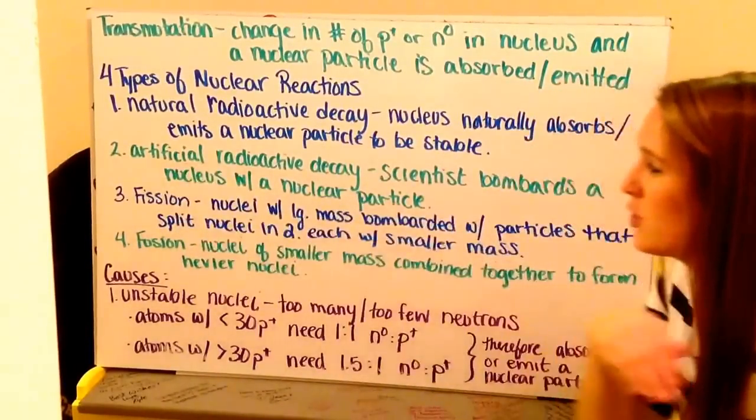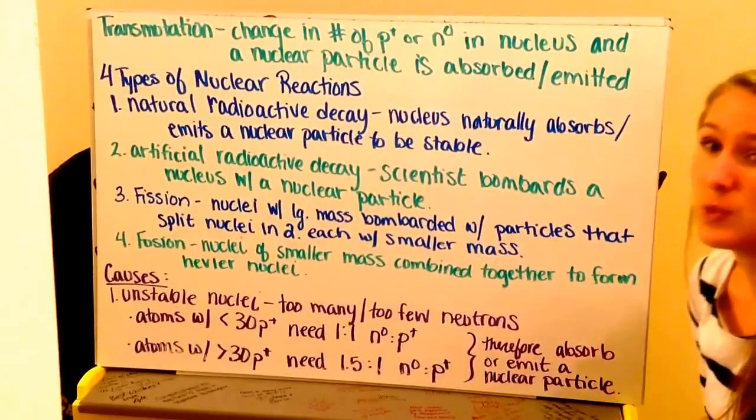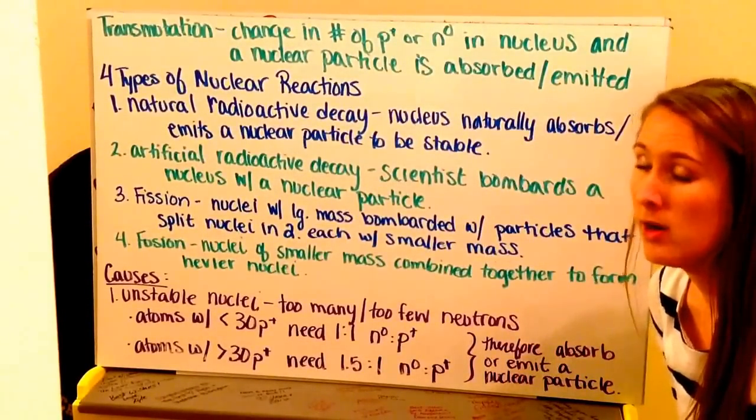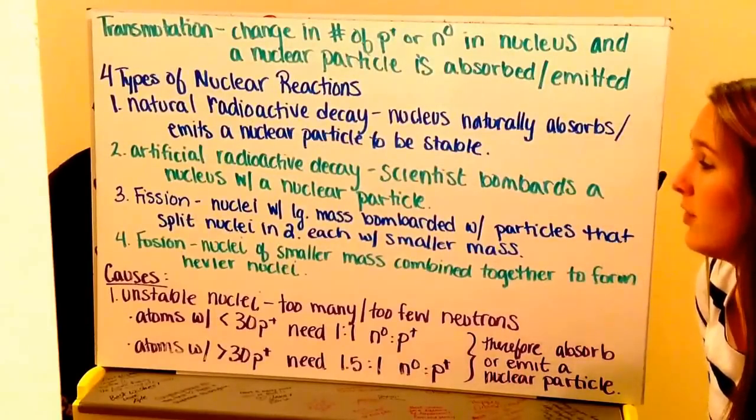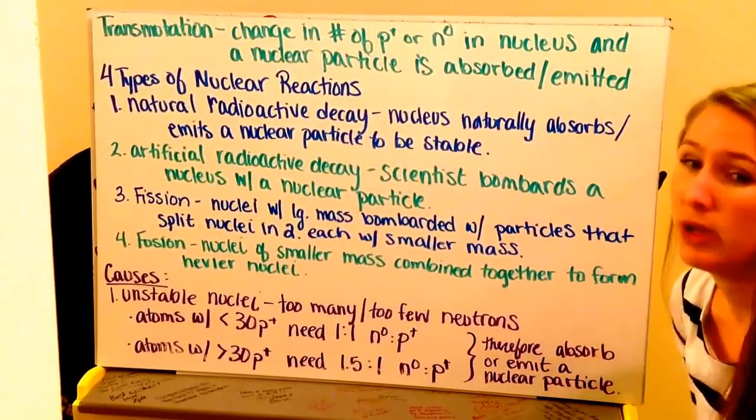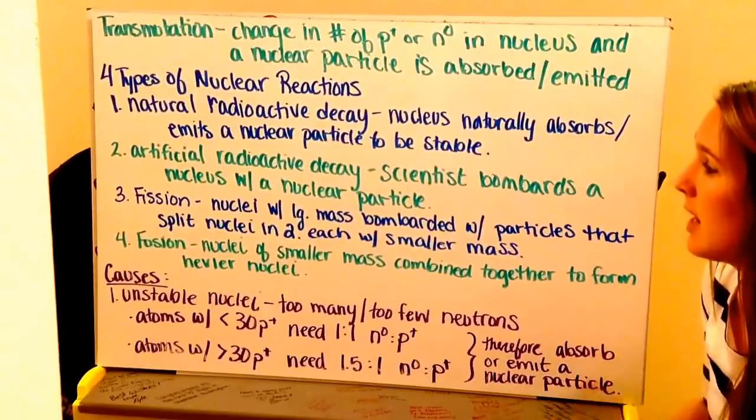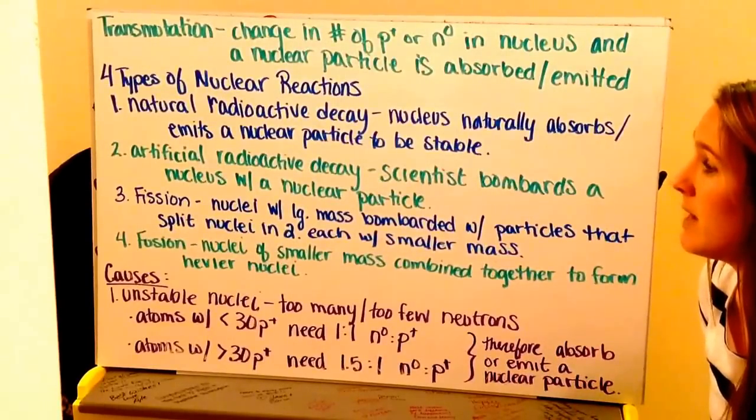Number two, we have artificial radioactive decay. This is where a scientist is going to bombard a nuclei with different nuclear particles to have it split apart or have it form together to make something new, a new element.